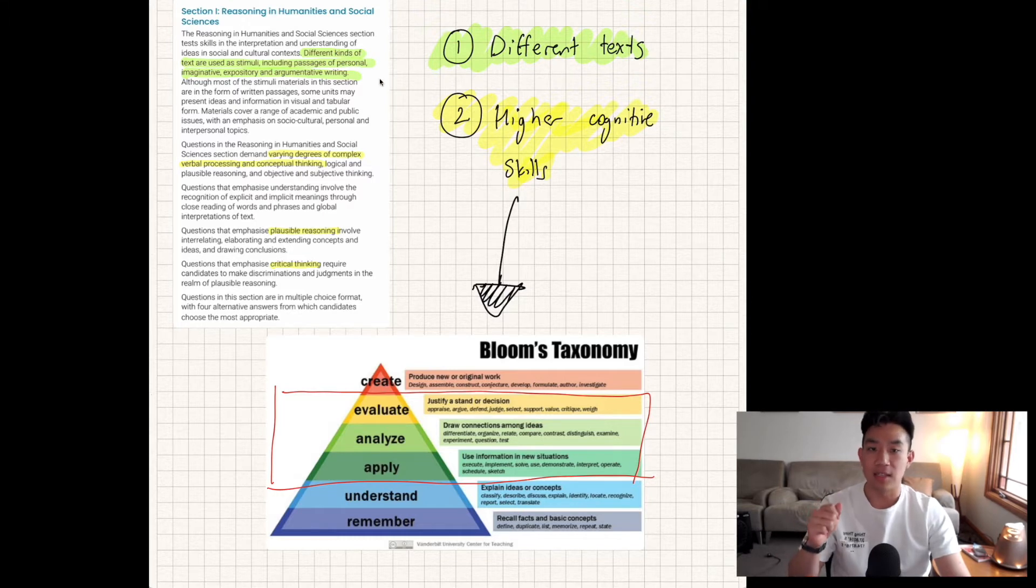What they're testing here is whether you're familiar with a variety of texts. The second thing that is significant is what's highlighted here in yellow, and this is exactly what they're testing out of those texts. What they are is simply your higher cognitive skills.